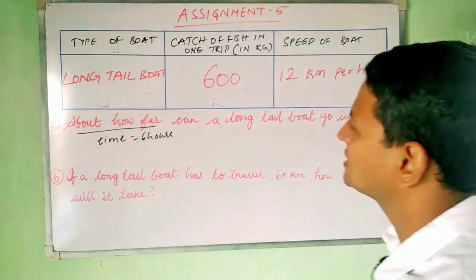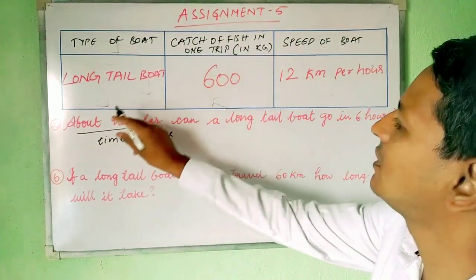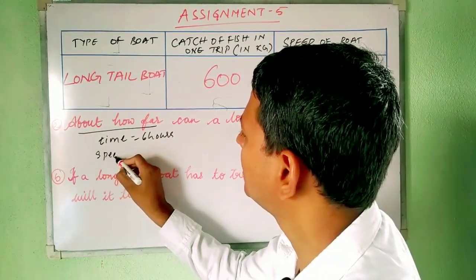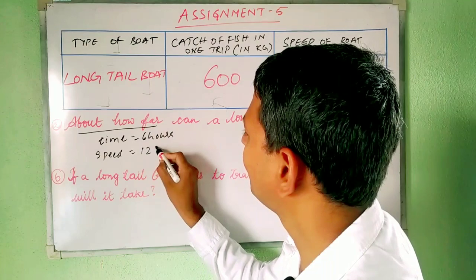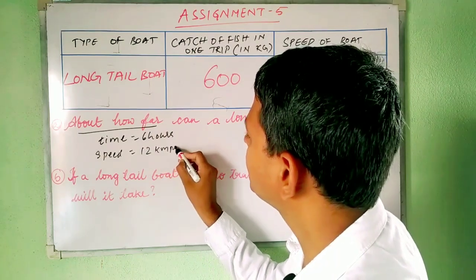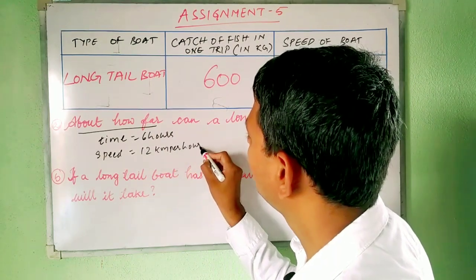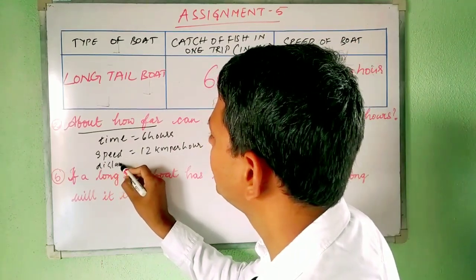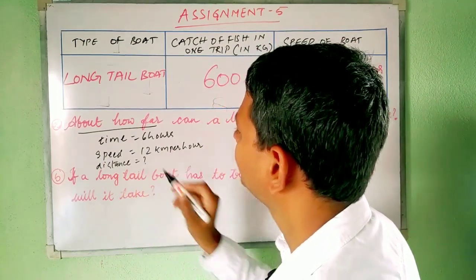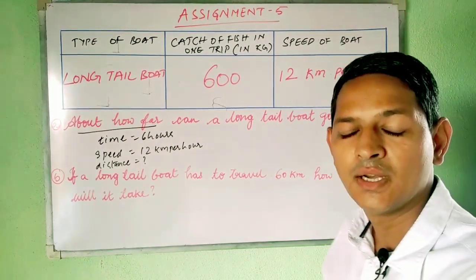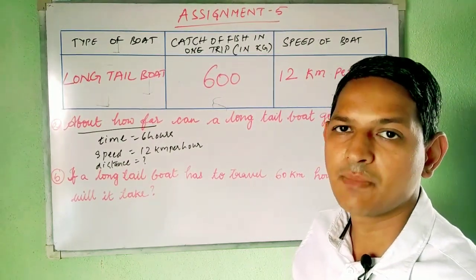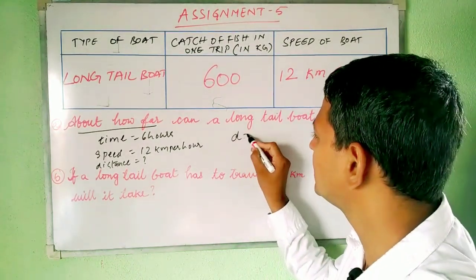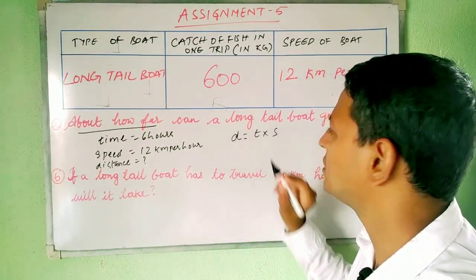What is asked? The speed of this long tail boat is given as 12 km per hour. And what is asked? They have asked us what is the distance. We already know the relation between distance, time, and speed from our last classes. Distance is equal to time multiplied by speed.